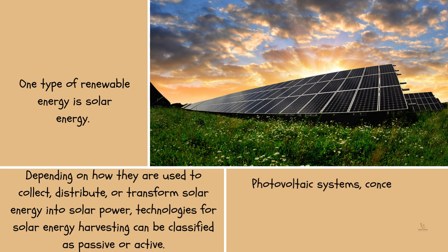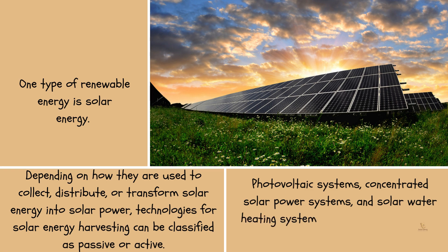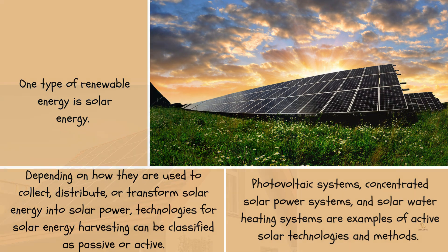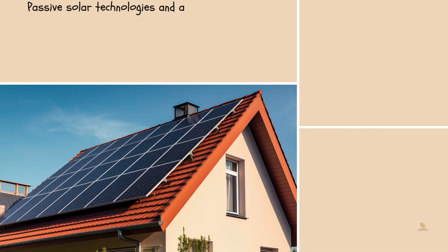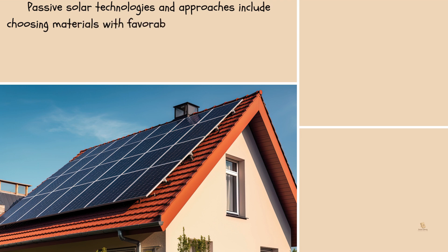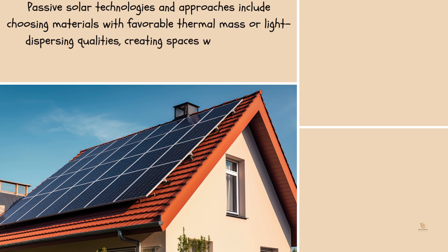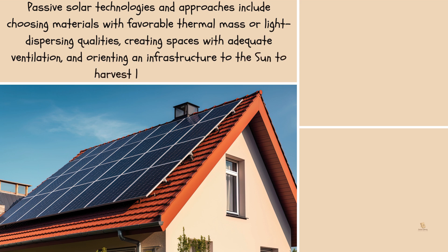Photovoltaic systems, concentrated solar power systems, and solar water heating systems are examples of active solar technologies and methods. Passive solar technologies and approaches include choosing materials with favorable thermal mass or light dispersing qualities, creating spaces with adequate ventilation, and orienting an infrastructure to the sun to harvest light and heat.